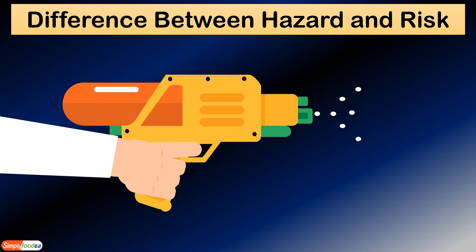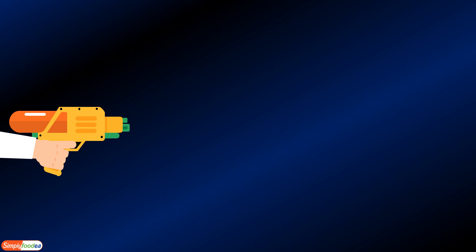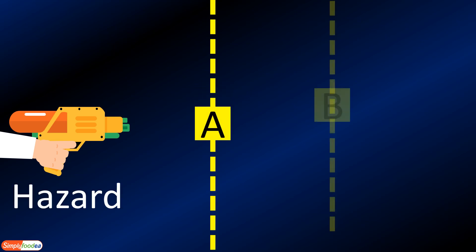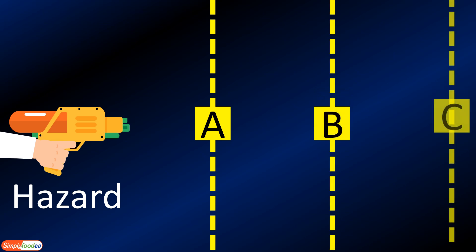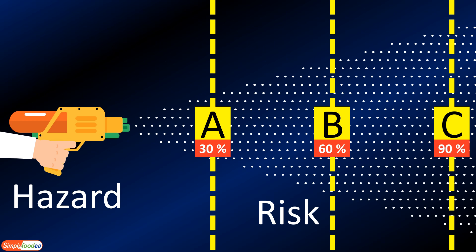I'll give a small example about hazard and risk using a water gun. Imagine the water is the hazard. We have a water gun with water inside and three paper walls: A, B, and C. When we splash the water on these walls, the risk is the percentage of water splashing on each different wall — for example, 30% low risk, 60% medium risk, and 90% high risk.